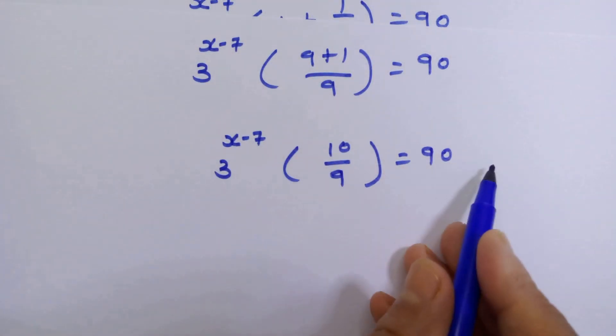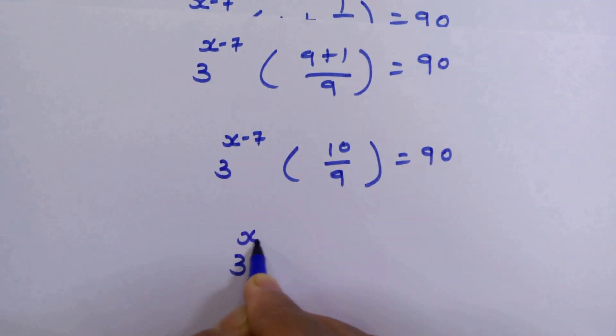Now let's move this part on the right hand side. So we have 3 raised to x minus 7 is equal to 90 times 9 upon 10.